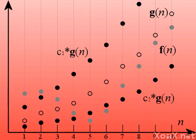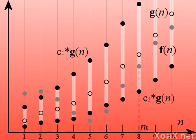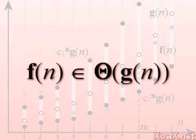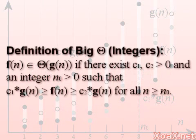Additionally, we can have two constant multiples of g(n) that bound the function f(n) on both sides from some point n₀ onward. In this case, we say that f(n) is in Big Theta of g(n). Formally, we say that f(n) is in Big Theta of g(n) if there exist positive constants c₁ and c₂ and a positive integer n₀ such that c₁ times g(n) is greater than or equal to f(n), which is greater than or equal to c₂ times g(n), for all n greater than or equal to n₀.